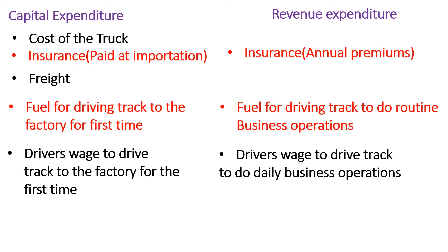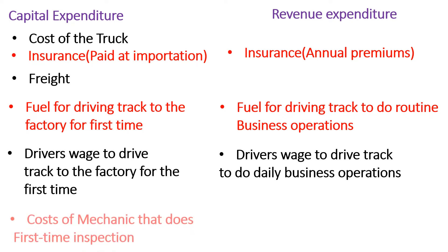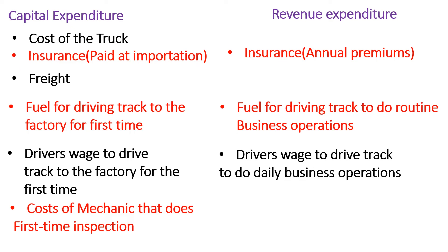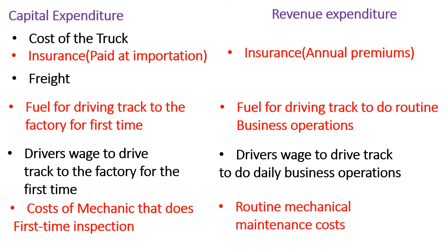Then there is the mechanic who checked the truck when it had just arrived for the first time. We were checking for any issues, doing due diligence to see if it was in good mechanical condition. The costs incurred in that initial inspection for the very first time are also tagged to the cost of getting that asset into my business. However, when the truck starts operating, the costs incurred in usual periodic maintenance are not capital expenditure — those are revenue expenditures, because they help the fixed asset operate smoothly to make me money.